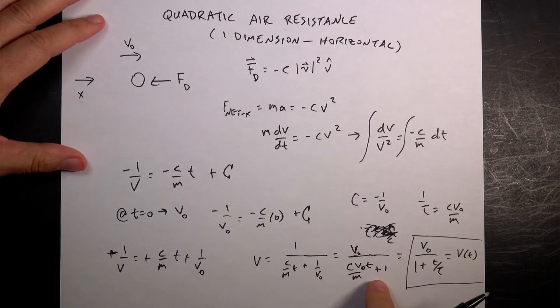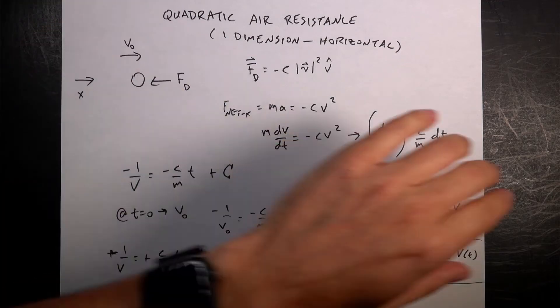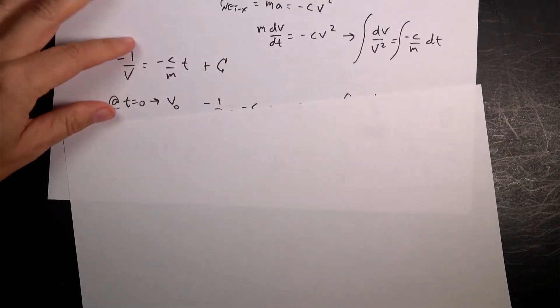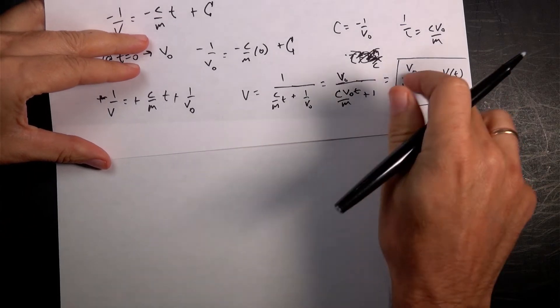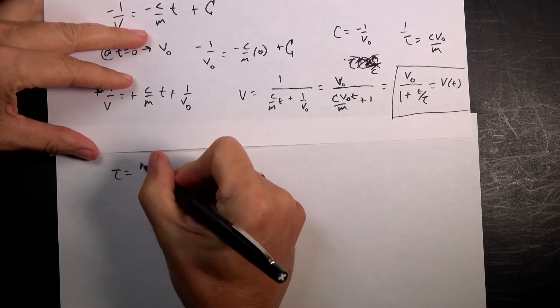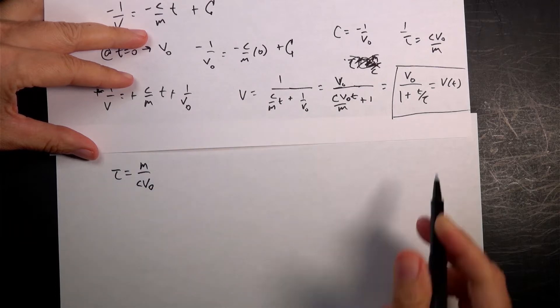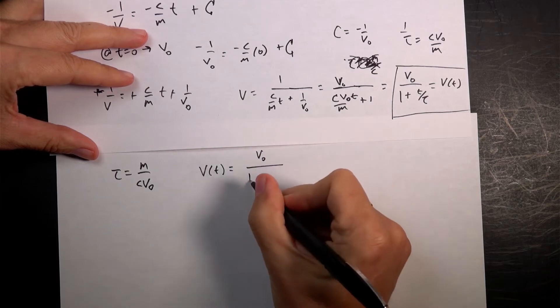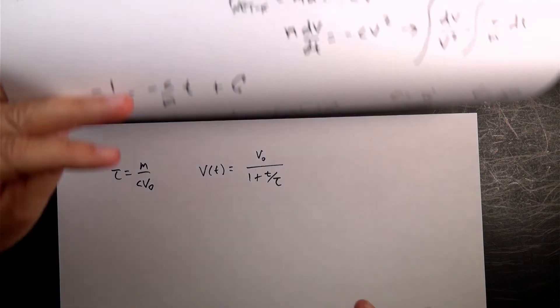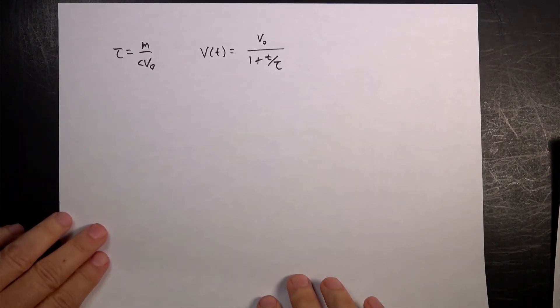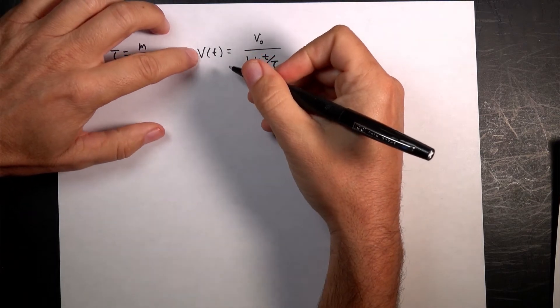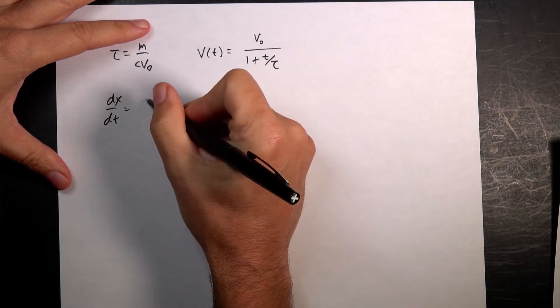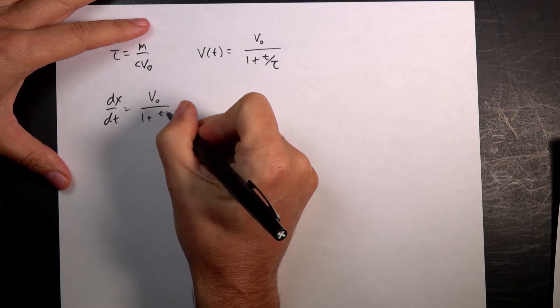Now I also want to get the position as a function of time. So let's start off, I'm just going to write my two important things here. And then I can move my sheet. I'm going to write these two things. So I have tau equals m over c v0. And then I have my velocity function. v is a function of t, is v0 over 1 plus t over tau. Now I want to solve this for position, so I can write the velocity as dx/dt. So dx/dt equals v0 over 1 plus t over tau.